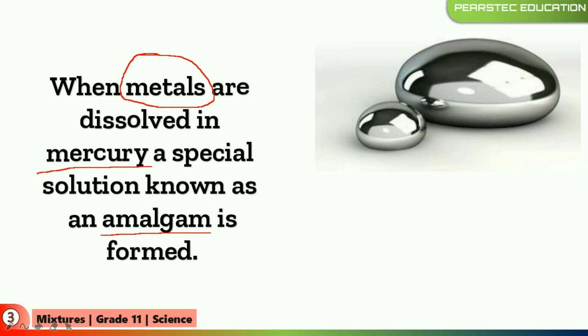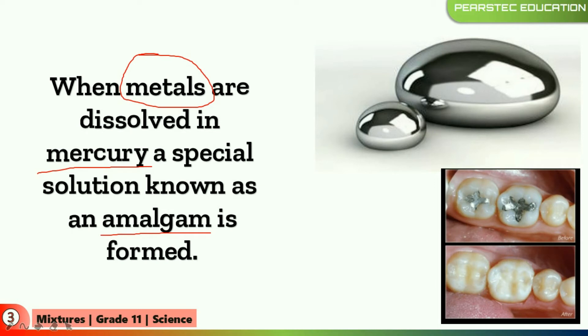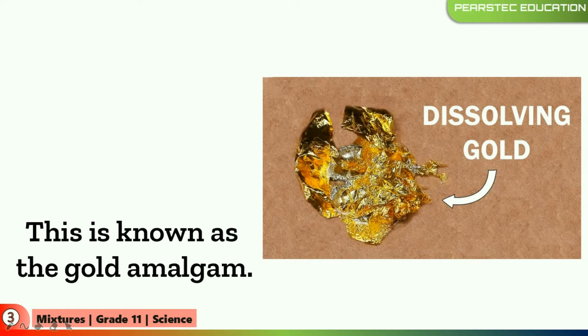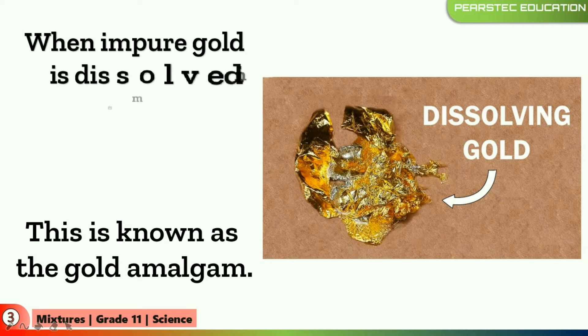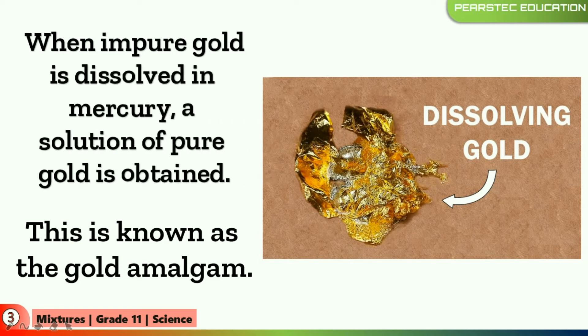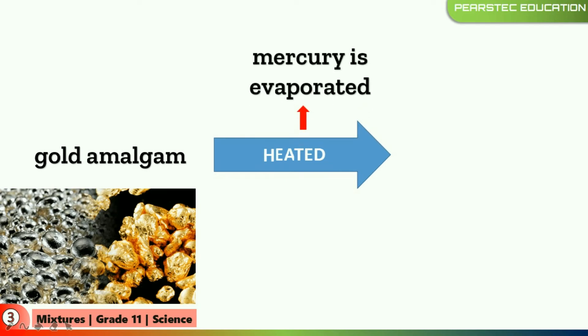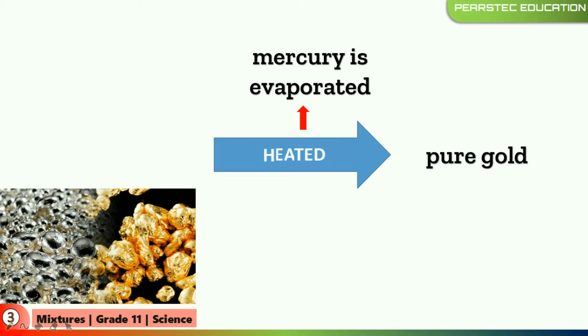Now that amalgam is formed. Doctors normally use amalgam in tooth filling — it's a mercury filling. This is known as the gold amalgam. In the gold amalgam, when impure gold is dissolved in mercury, a solution of pure gold is obtained. When you heat that gold amalgam, the mercury will get evaporated, and when the mercury is getting evaporated, you have pure gold in your hand.